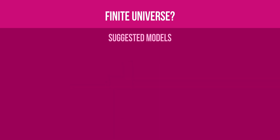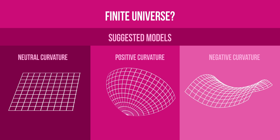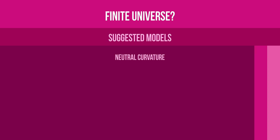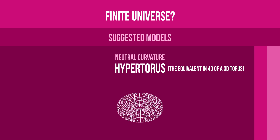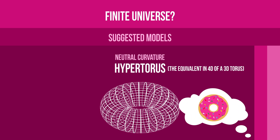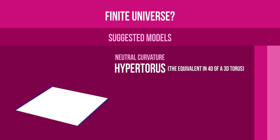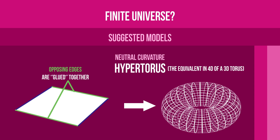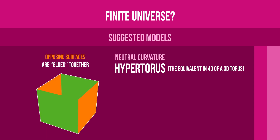The proposed models can be classified into three categories depending on the curvature of spacetime. If we assume, based on current calculations, that the universe as a whole is flat, one possible shape would be that of a hypertorus — the equivalent, in higher dimensions, of a 3D torus, a donut-like shape. A 3D torus is the solid formed by a rectangle whose opposing edges have been glued together. A hypertorus would be formed in a similar way, by a 3D rectangular prism whose opposing surfaces have been glued together.